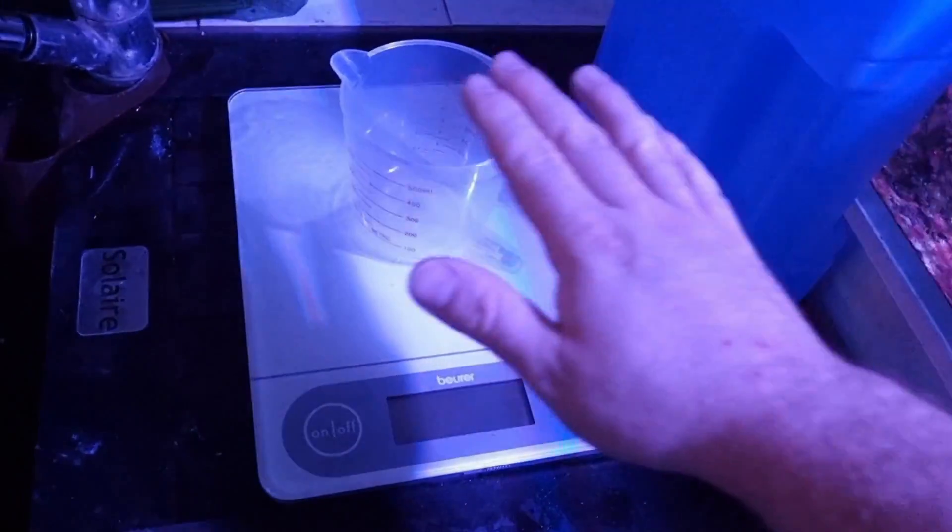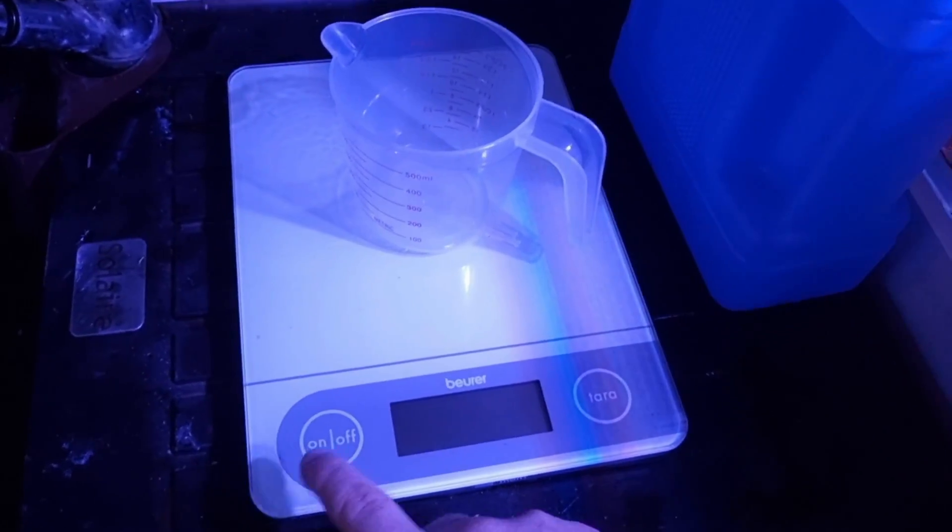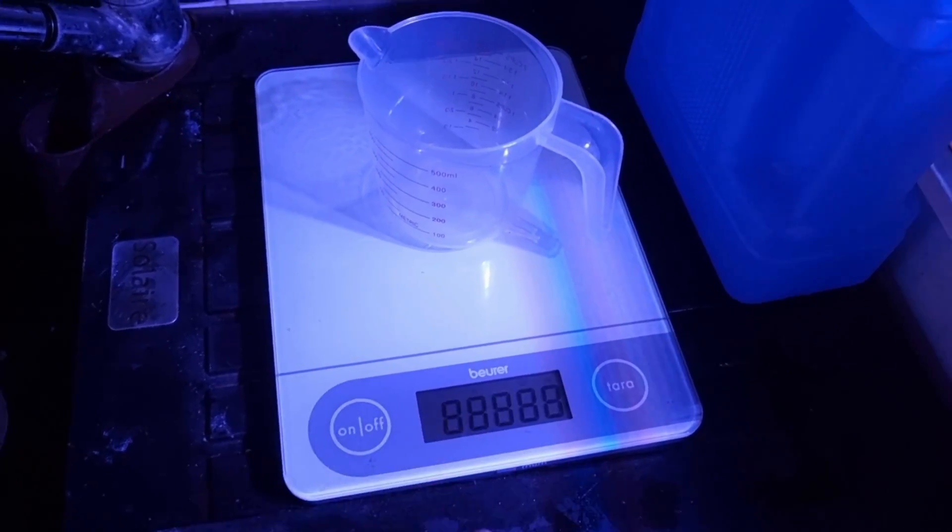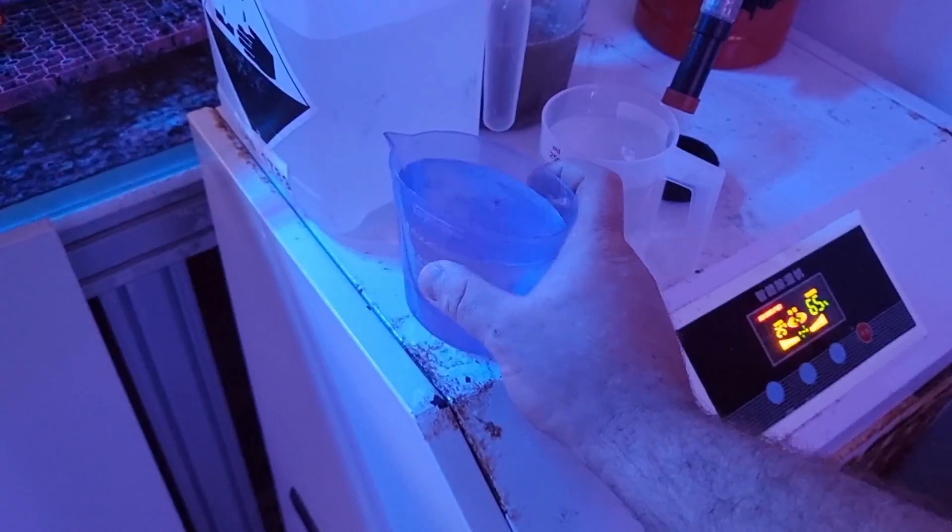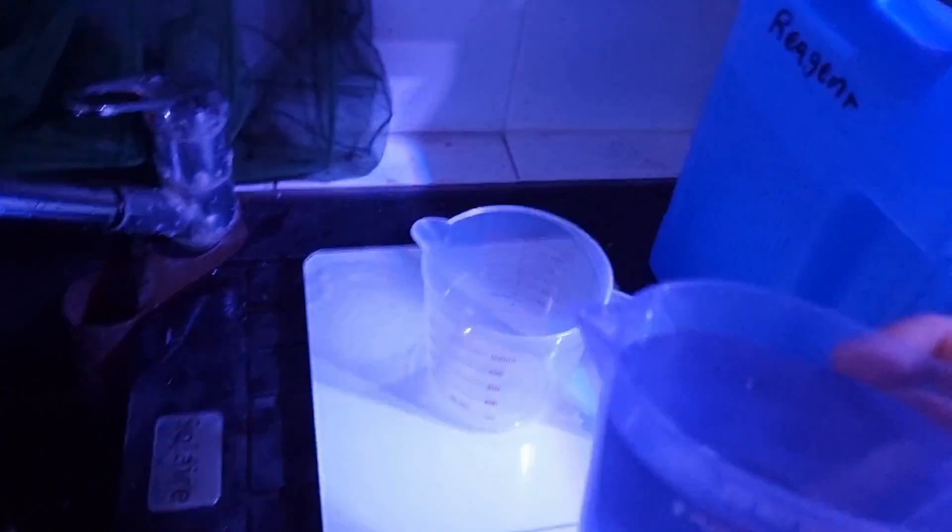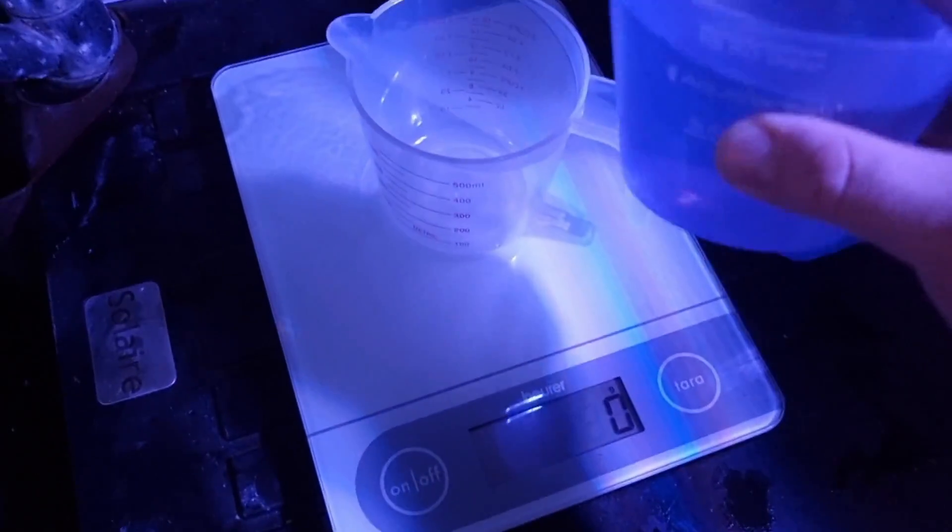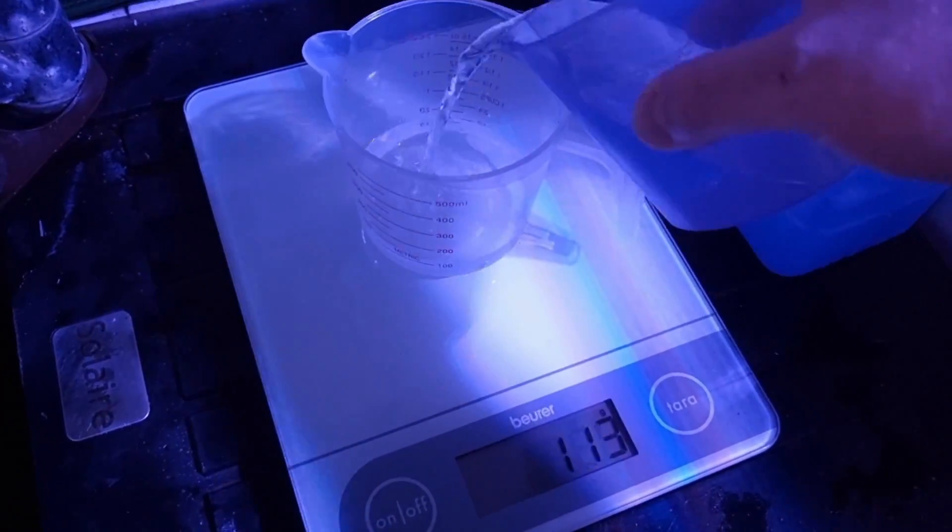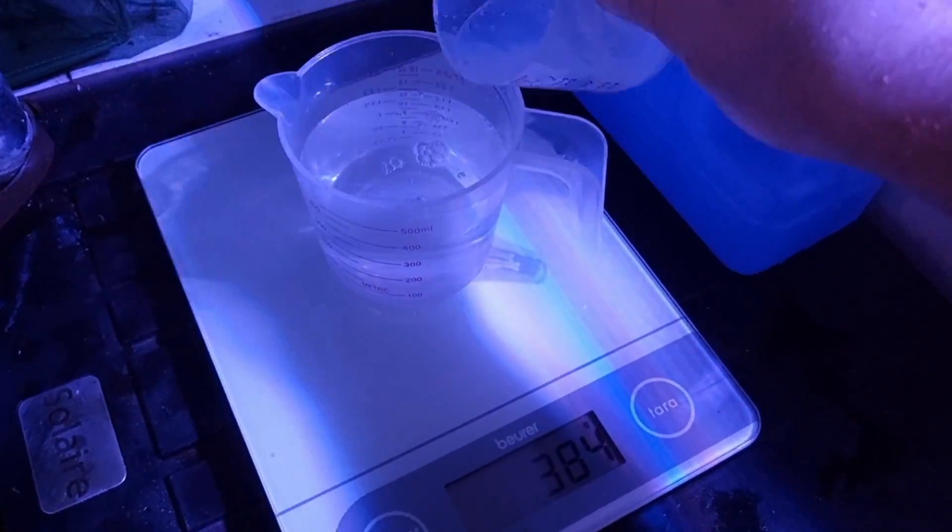of RO water. We need to add the reagent - we needed 400 mils. Let's just turn that on. There's the reagent, but I put it in cups to make it easier to handle. Now we've got